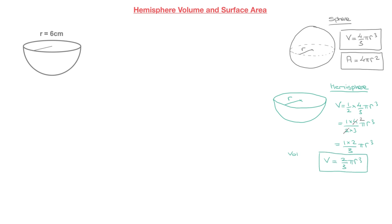That's the formula for the volume of a hemisphere. Now, what about the surface area? The key thing to realize is that the surface area of a hemisphere comes in two parts. We have the curved surface area which wraps around the hemisphere — the curved surface area will be equal to one half of the area of a sphere. But we also have to consider the disk at the top of this hemisphere, and since it's a disk of radius r, its area is π r².